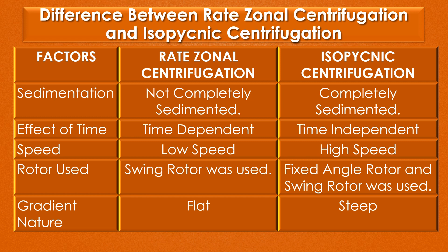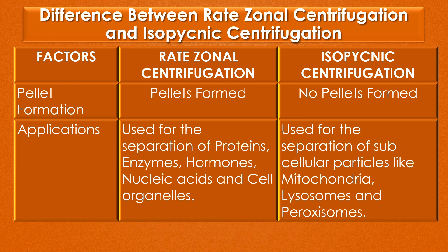The gradient nature of rate zonal centrifugation is flat, but the gradient nature of isopycnic centrifugation is steep. Regarding pellet formation, pellets are formed in rate zonal centrifugation, but no pellets are formed in isopycnic centrifugation.